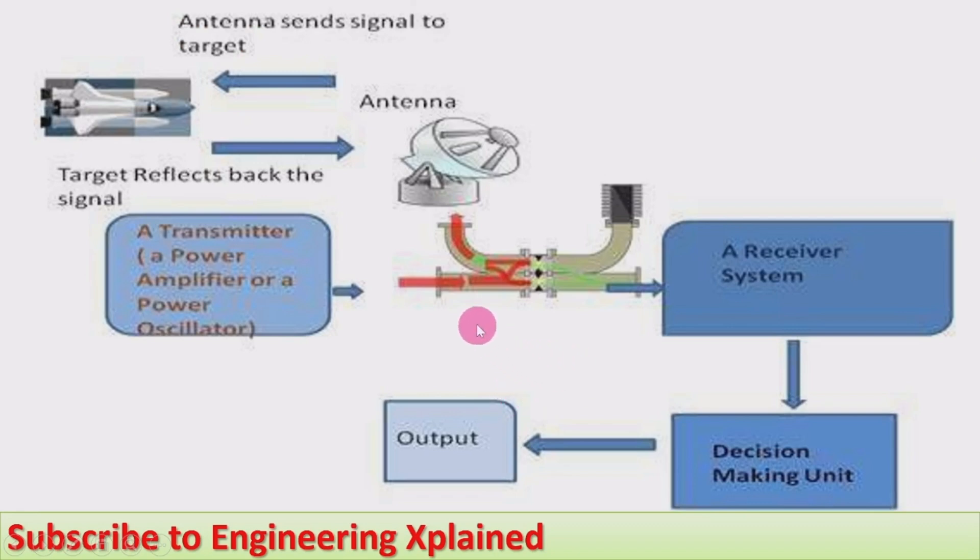Here is a simple working diagram. The antenna sends the signal to the target. The target may be anything - it may be a ship, aircraft, human being, or any other thing. The target reflects back the signal. There is a transmitter - a power amplifier or power oscillator - used as a transmitter that transmits this signal to the receiver. A receiver system receives it.